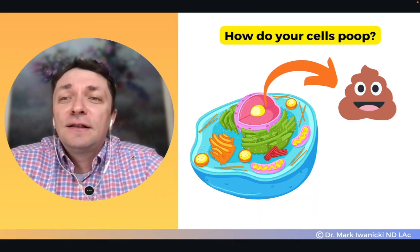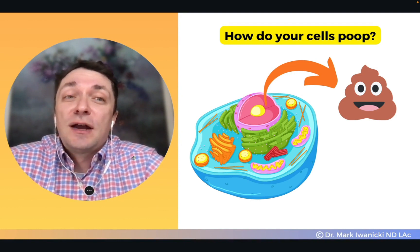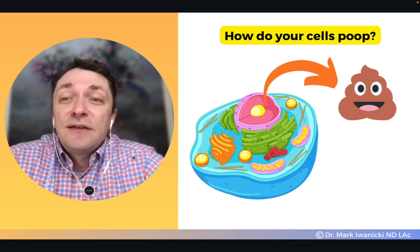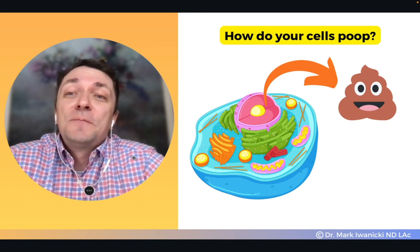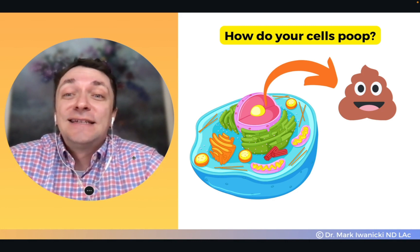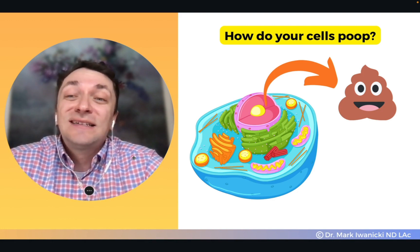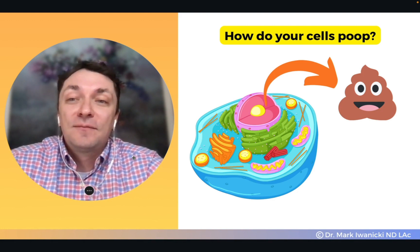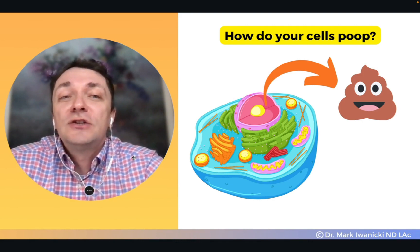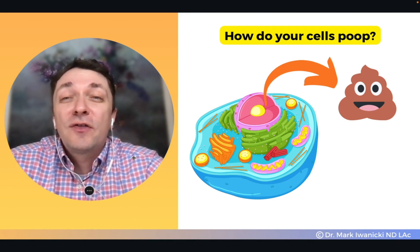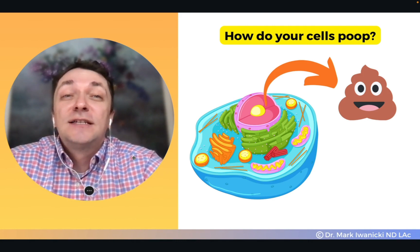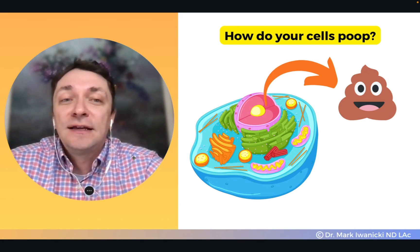Every cell in the body produces metabolic waste products or cellular poop. Over trillions of cells produce this waste on a continuous, daily basis that needs to be processed and eliminated out of the body. Think about all the waste that each cell is producing and how the body in its intelligence processes all of that on a daily basis.